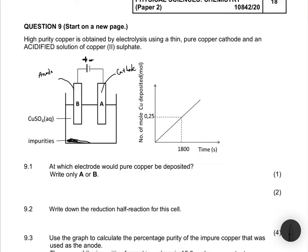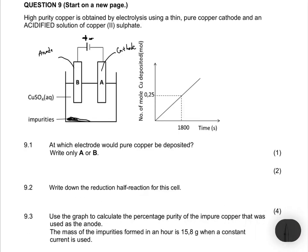At which electrode will pure copper be deposited — A or B? Pure copper is deposited where reduction happens, the gaining of electrons, which takes place at the cathode. So our answer is A, because A is our cathode and that's where reduction takes place.